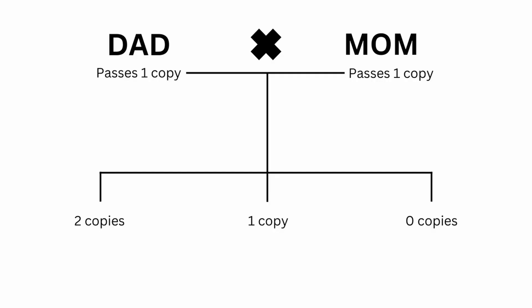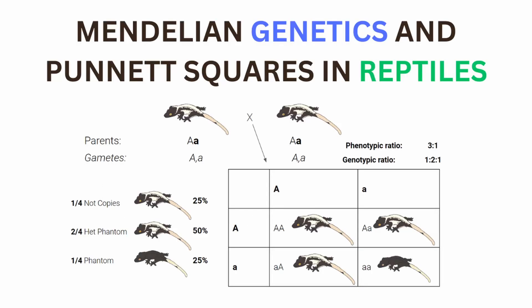When a dad and a mom have kids, they can each pass up to one copy of a gene for each one of the kids. Therefore, for each of the kids they can either pass zero, one, or two copies of the gene. Go check out our video on Mendelian genetics to understand this video better — it will build your basic knowledge on the concepts we're going to be going over today, and if you don't understand those concepts you're going to have a hard time understanding this video.